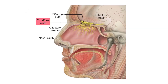At the top of the nasal cavity, we have the cribriform plate, a porous part of the ethmoid bone that allows the olfactory nerves to cross through to the olfactory bulb, allowing for the sense of smell.